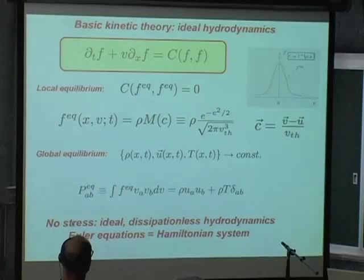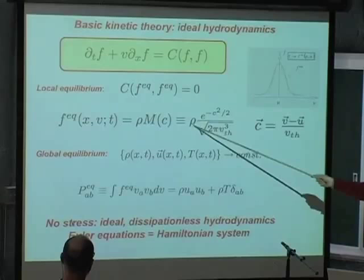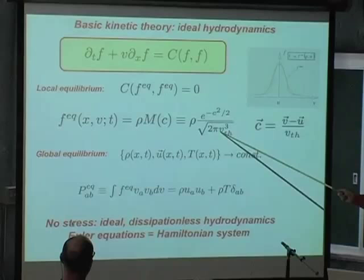There are a few general considerations to be made about this distribution function. This is the fluid density. And then you have the Gaussian shape. This is the normalization factor. This is the thermal speed — the square of the thermal speed is basically the temperature. And C is the so-called peculiar speed, which is the relative speed of the molecule versus the speed of the fluid.